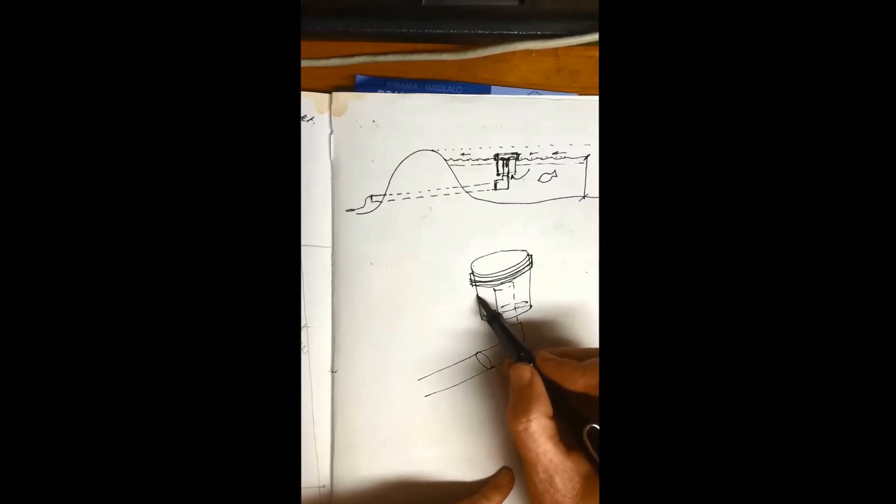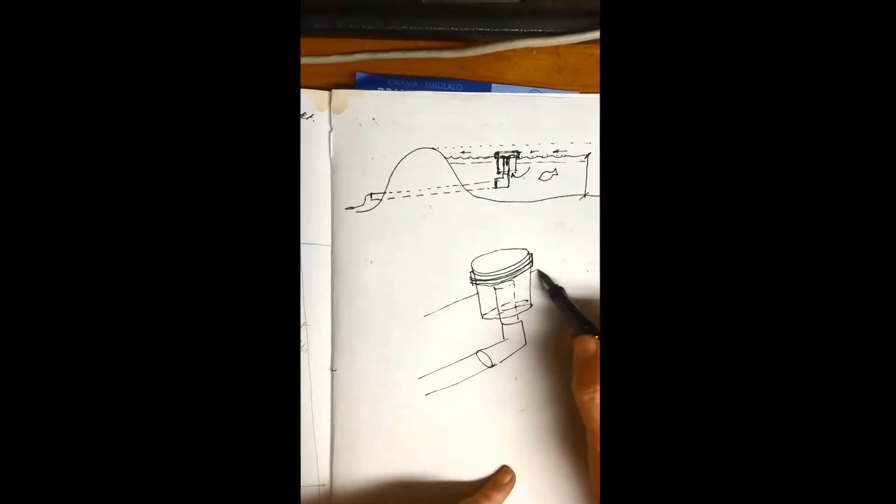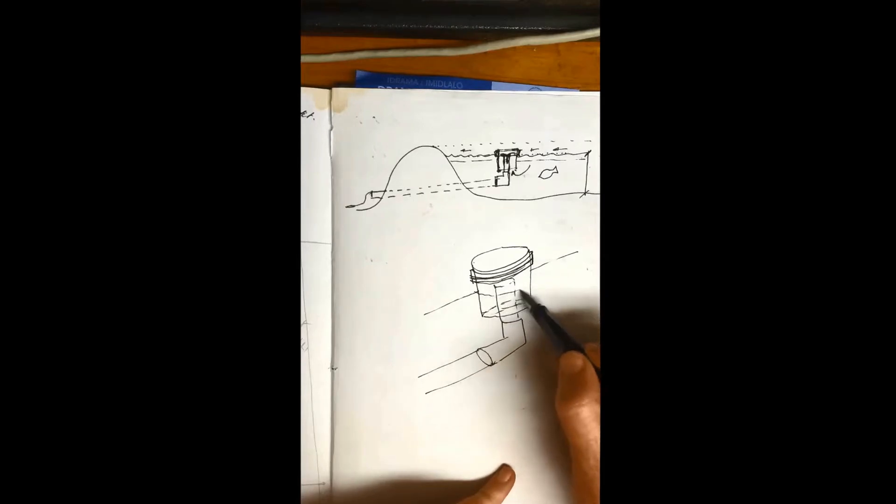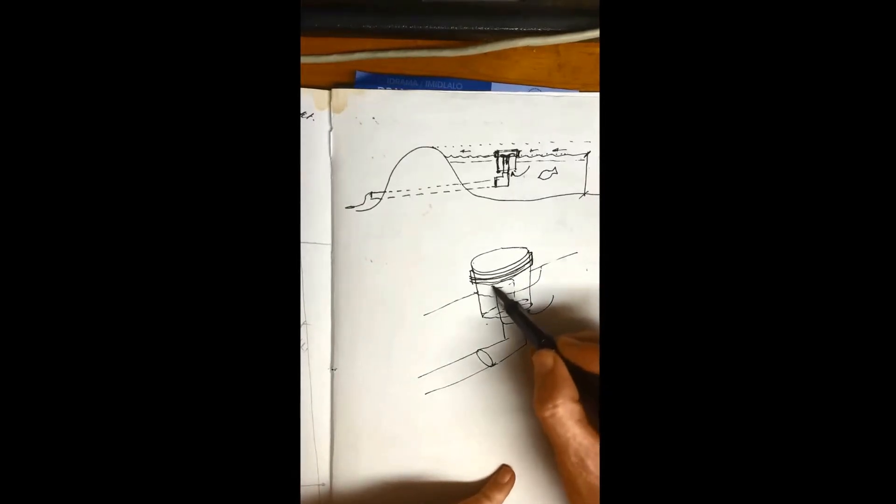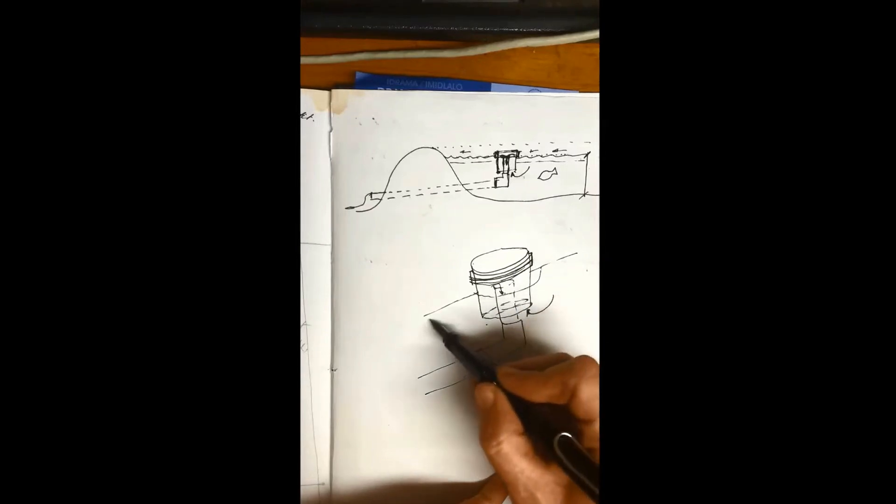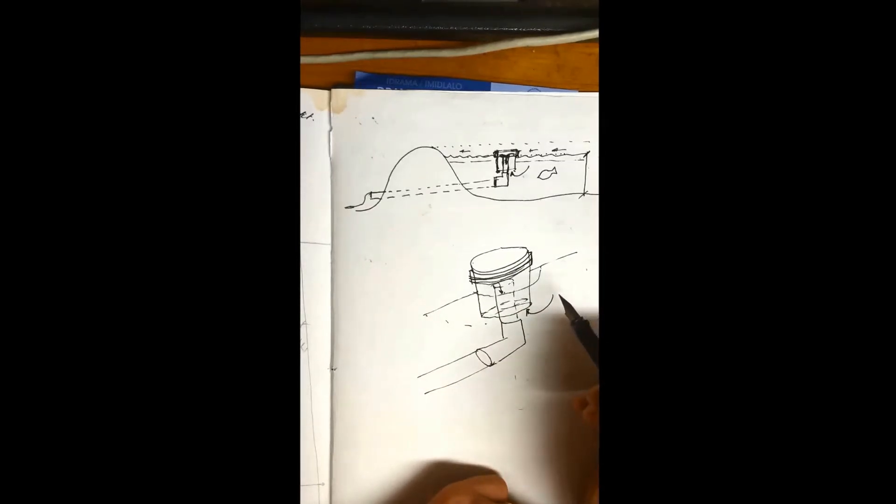And then the water level sits at about that level there. Water then flows in from underneath and then in through. Easy peasy. Any questions let me know.